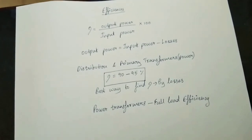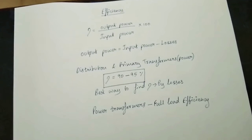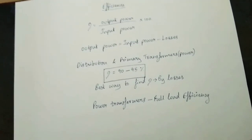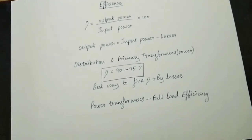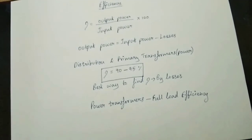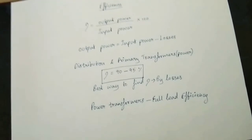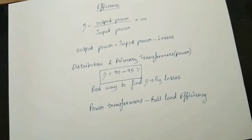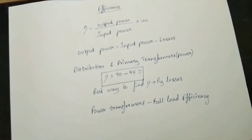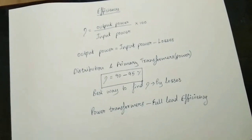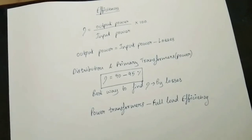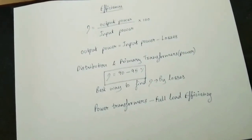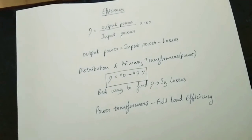In the power system structure, the transformer efficiency is 90 to 95%. The output power and the range will be compared to the output power. Hence, if you measure the output power and the loss, the efficiency will be easily calculated.